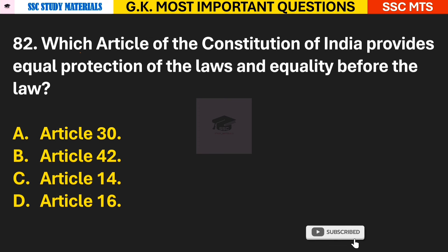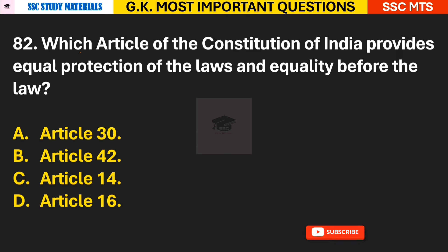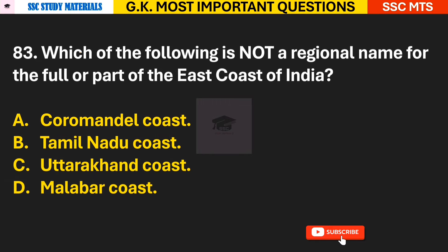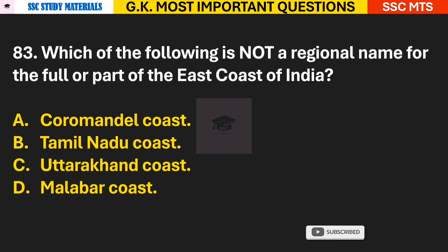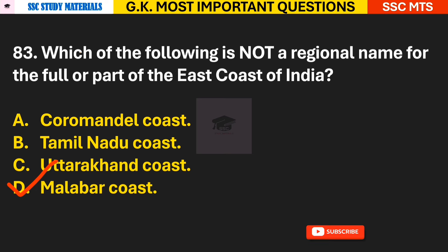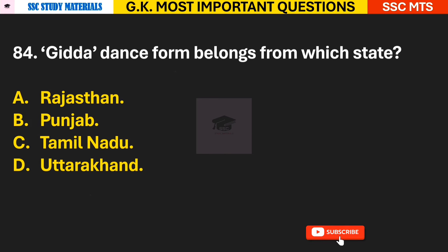Question 82: Which article of the Constitution of India provides equal protection of the laws and equality before the law? Answer C — Article 14. Question 83: Which of the following is not a regional name for the full or part of the east coast of India? Answer D — it is the Malabar Coast.